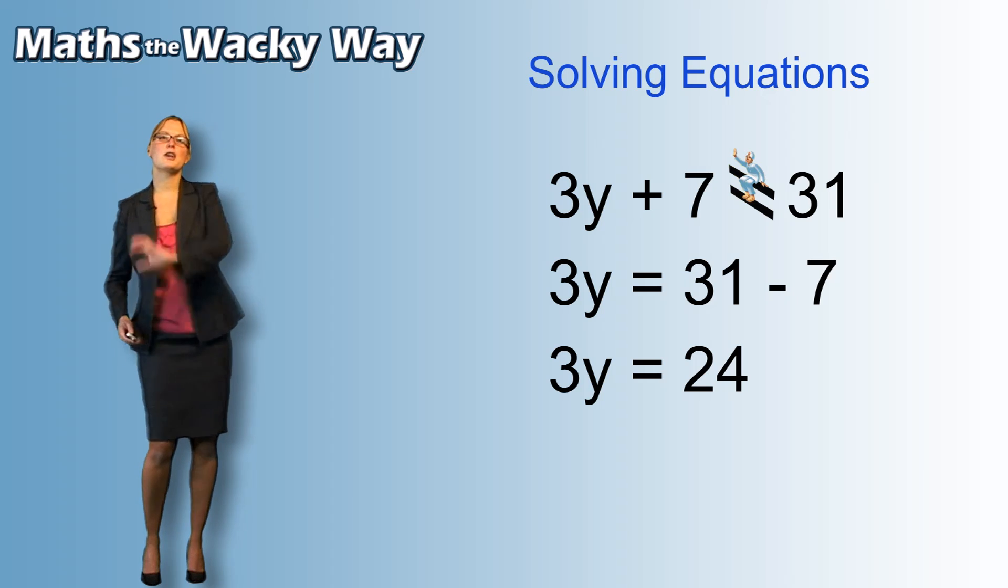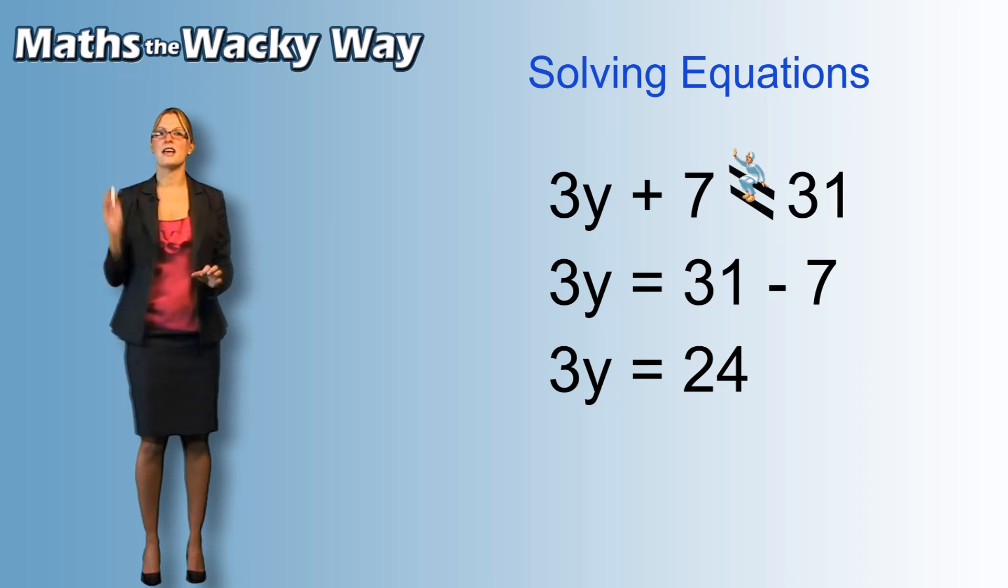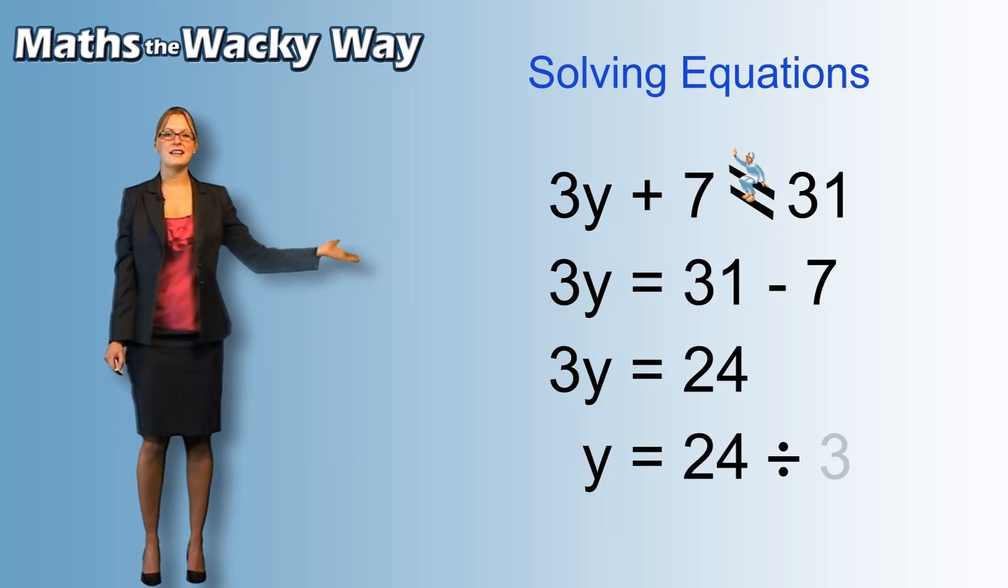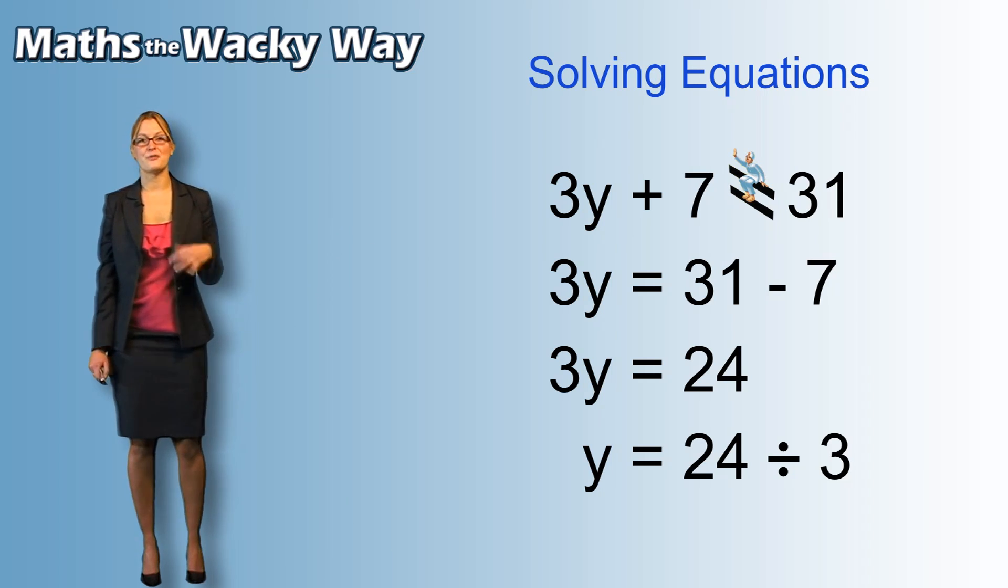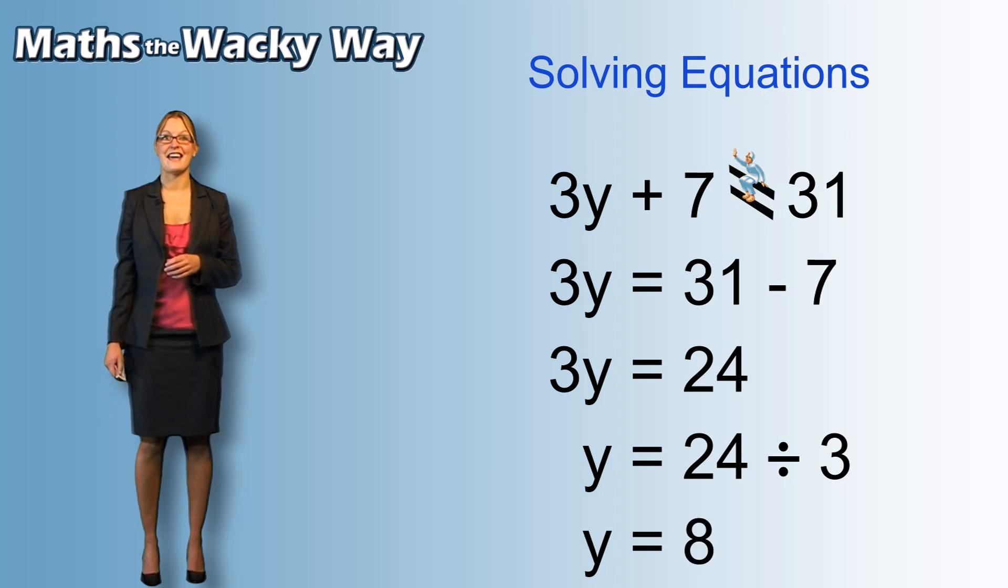So the 3 is going to go to the other side, it's going to get a high five, it was multiplying. When it goes to the other side, it's going to divide and as we said already, it's got to join the back of the queue. So 24 divided by 3, we then tidy up and we get our 8.